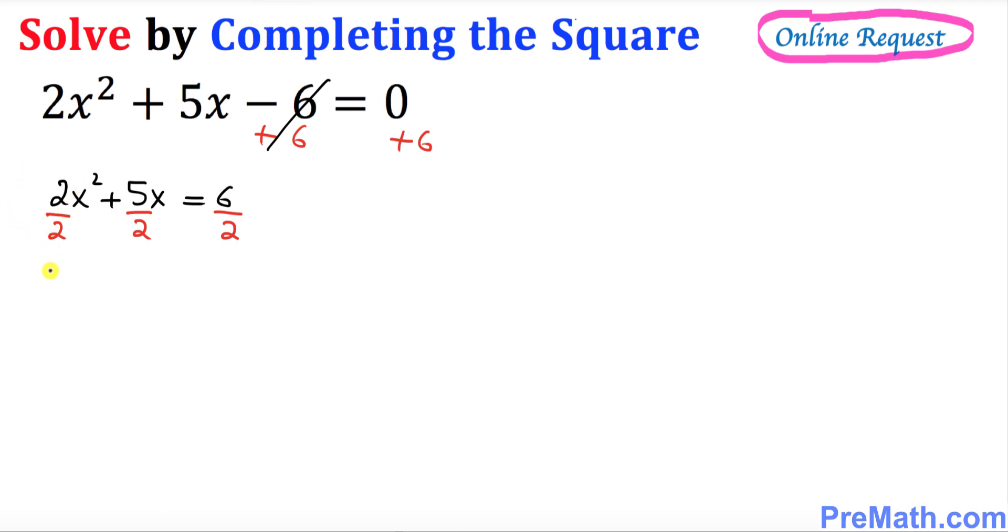So 2 over 2 is simply 1x² + 5/2 x = 6/2, which is 3.